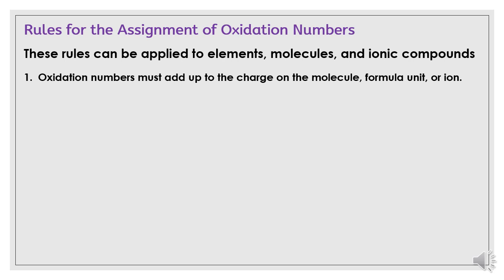Rule number one: oxidation numbers must add up to the charge on the molecule, formula unit, or ion. For example, in a polyatomic ion, the sum of the oxidation number of all atoms is equal to the overall charge on the ion.